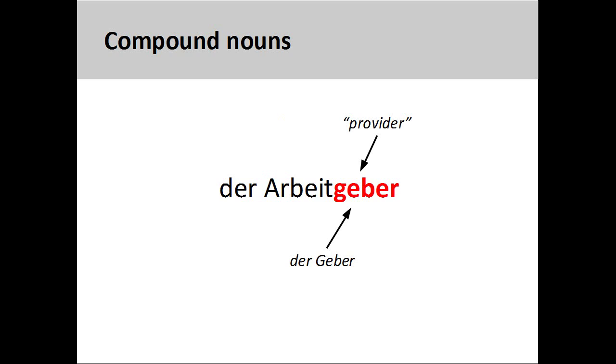You will recall from the presentation on masculine nouns that all nouns ending in er that are derived from a verb are masculine. Here you will note an important rule governing compound nouns. The final noun in the chain will determine the gender of the compound noun. By putting these two nouns together, meaning work and provider, we can come up with the definition of the noun, which is employer.